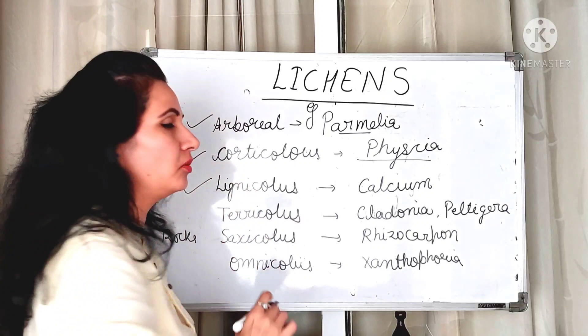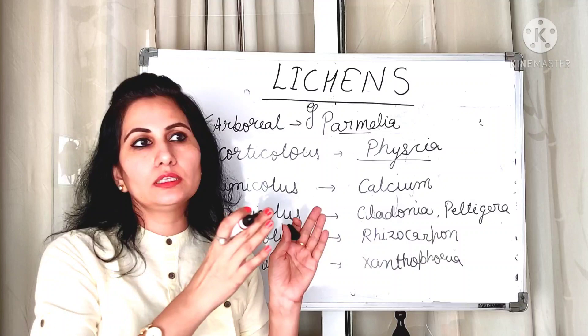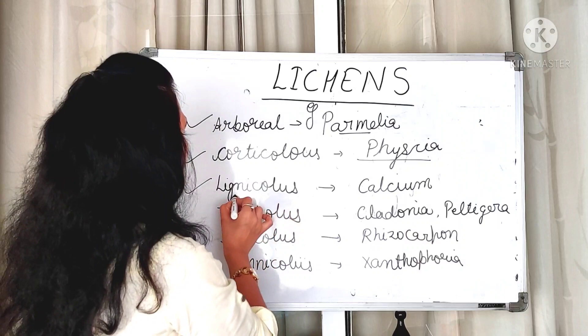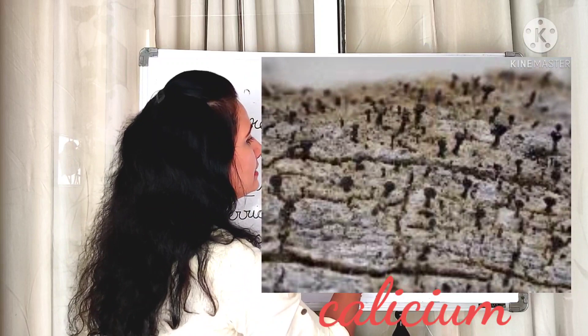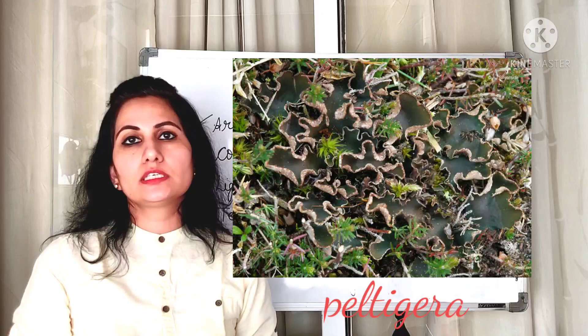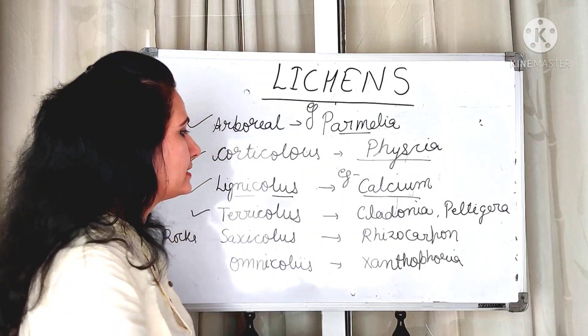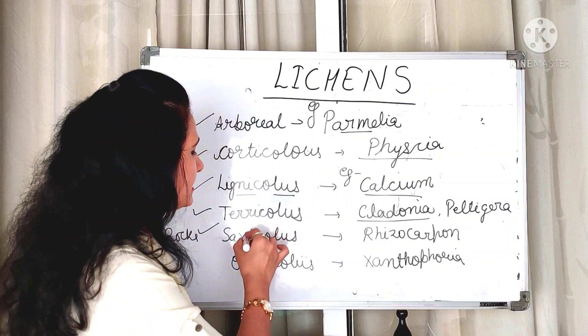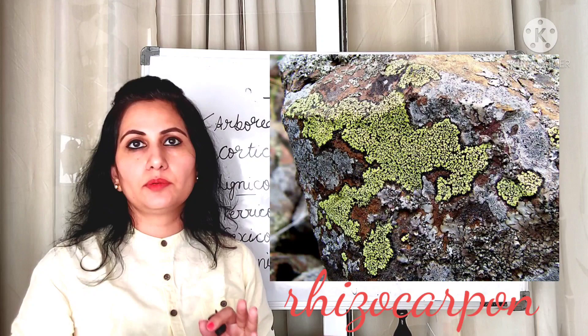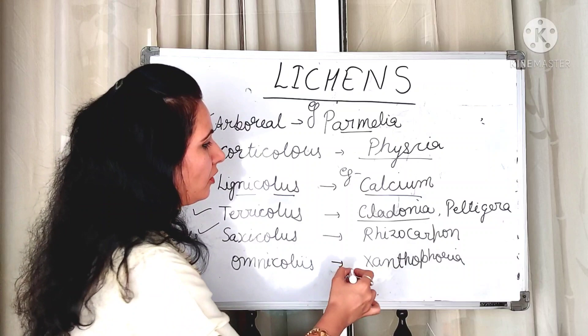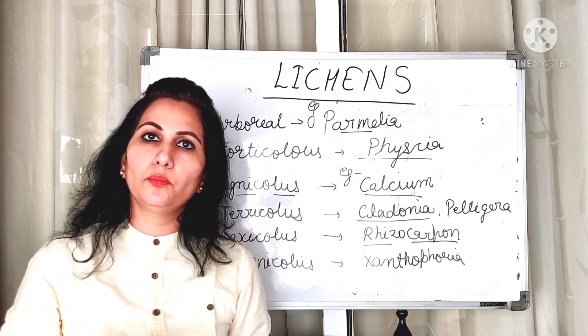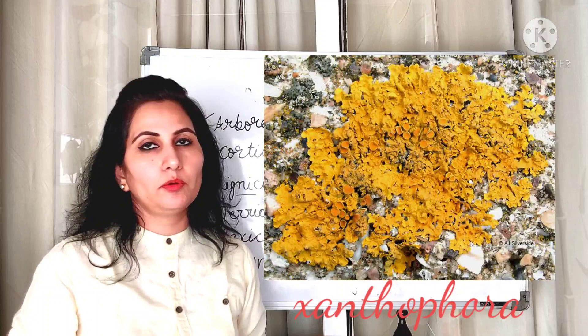Next is lignicolous — if a lichen is found on wood, such as on a door or window pane, it is known as lignicolous, and an example is Calcicum. Next is pterricolous, which are terrestrial lichens residing on the surface of the land; examples are Cladonia and Peltigera. Saxicolous lichens are found on rocks; an example is Rhizocarpon.